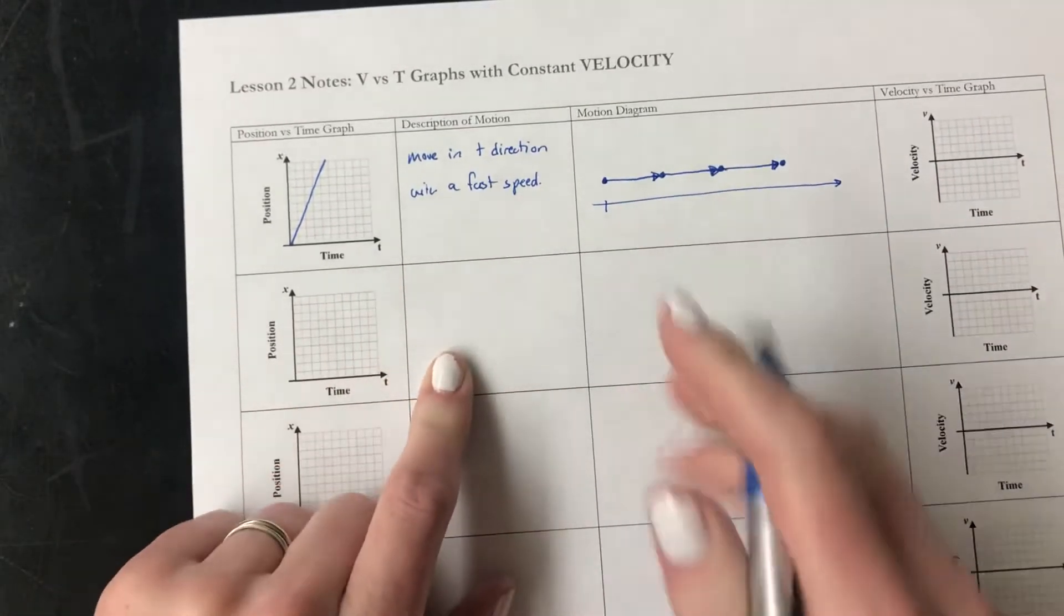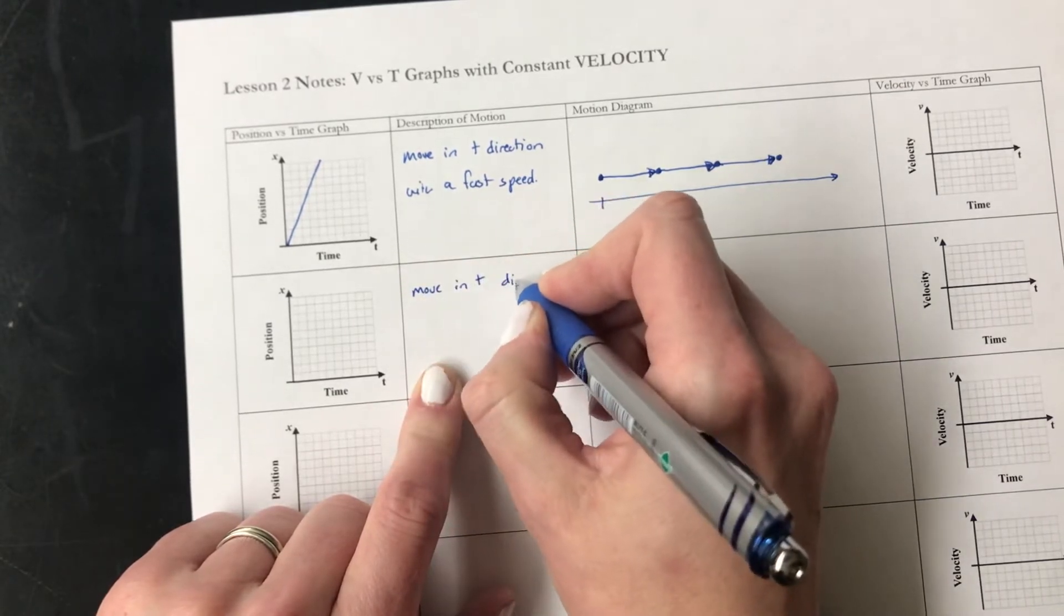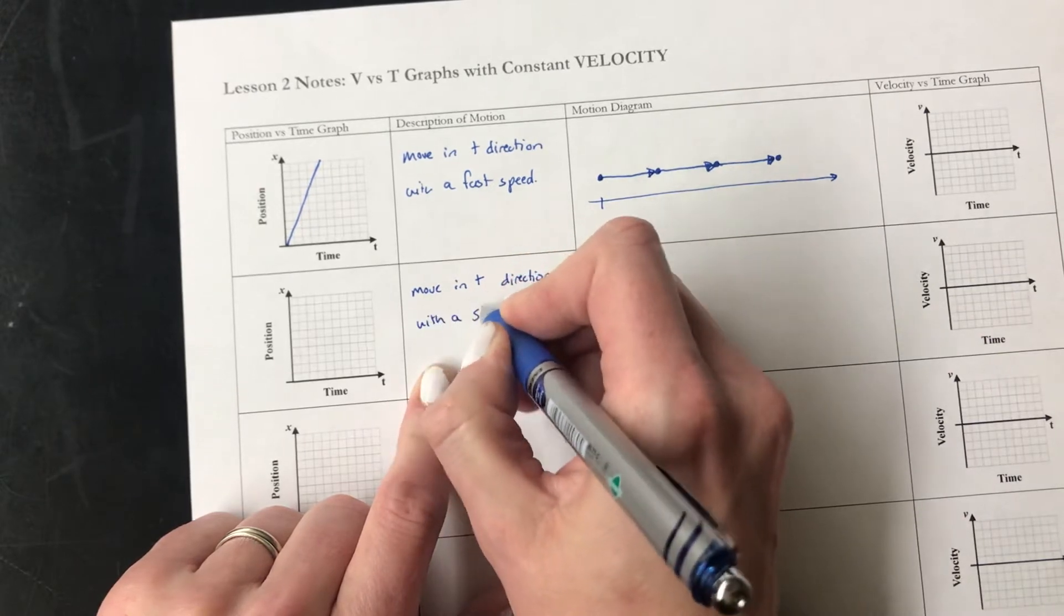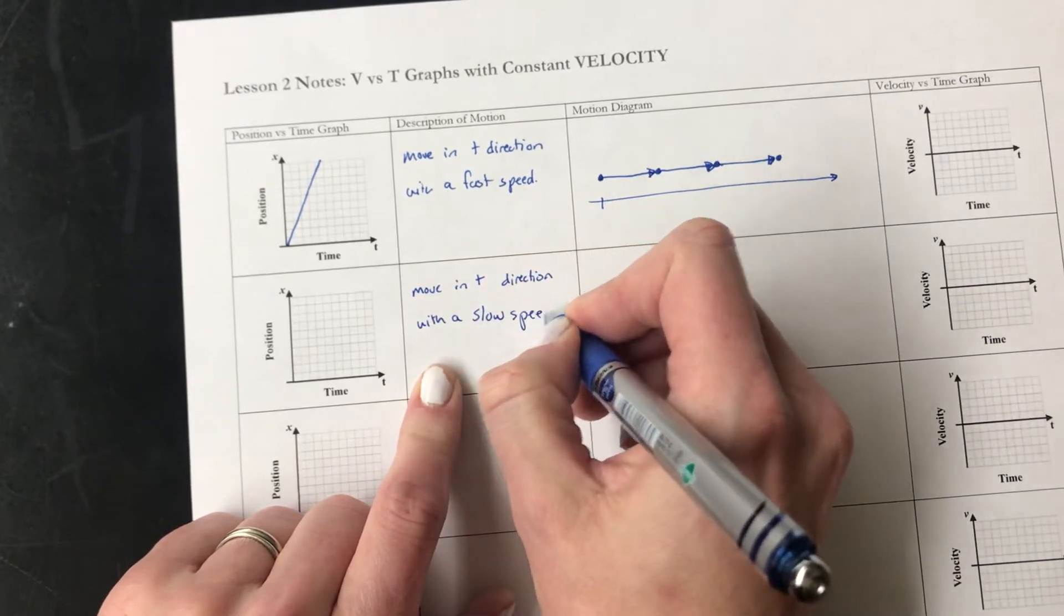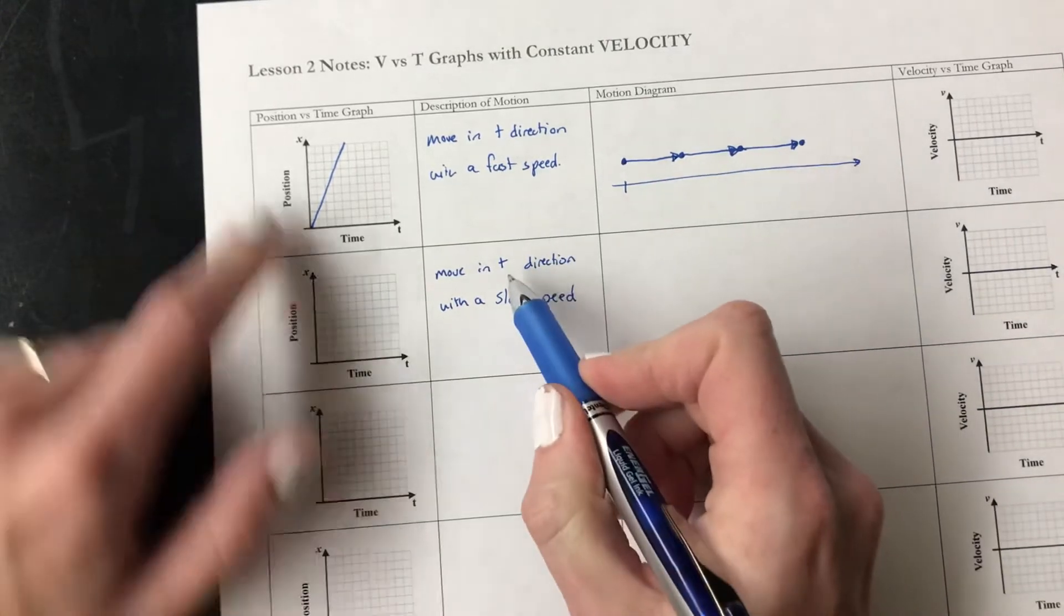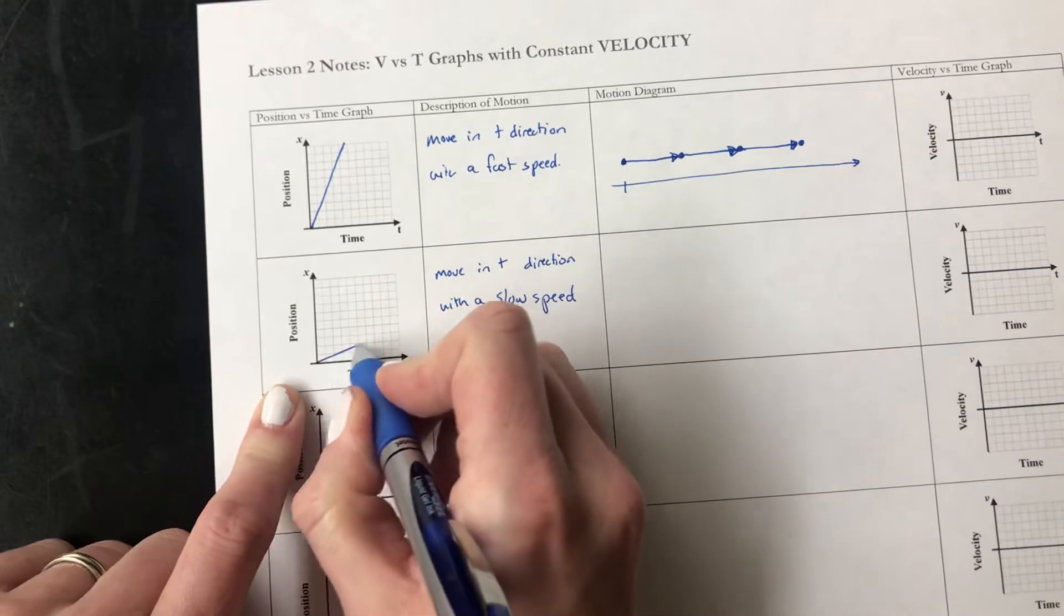The next motion that we can look at is moving in the positive direction with a slow speed. What that means for our line is that it's still going to go up, just like this one, but it's going to be less steep because it's slow. So it's going to look like this.